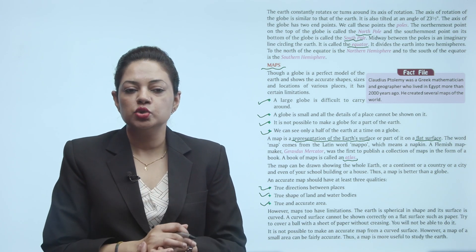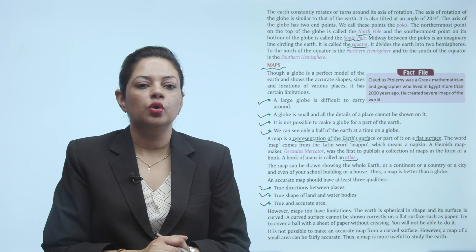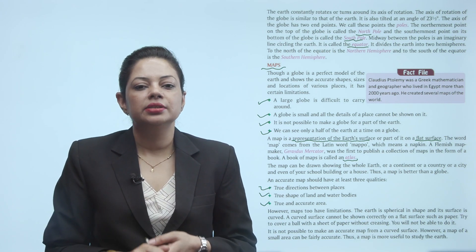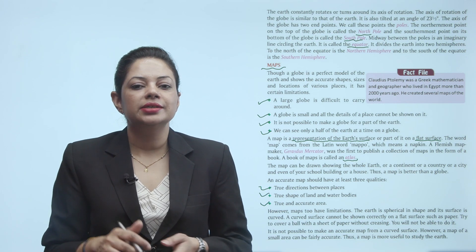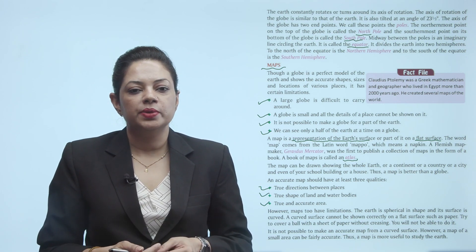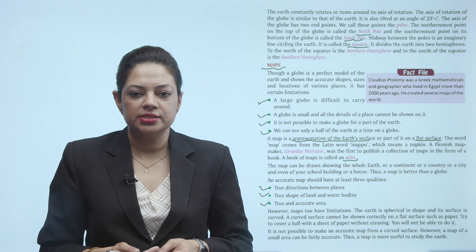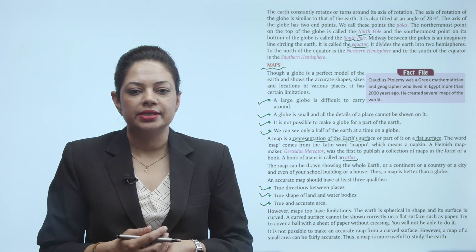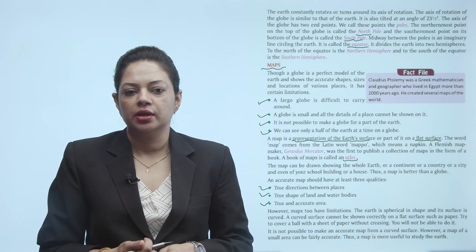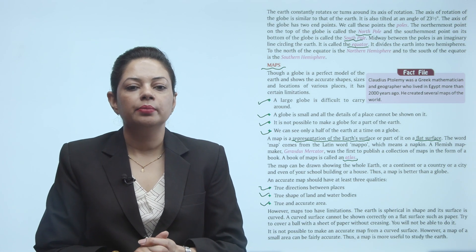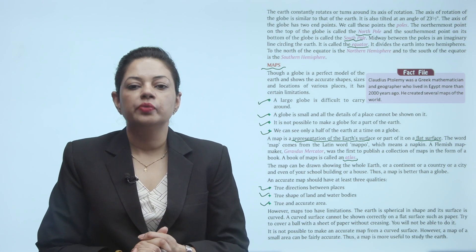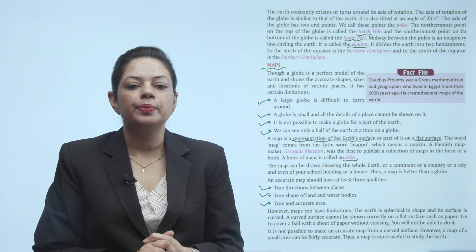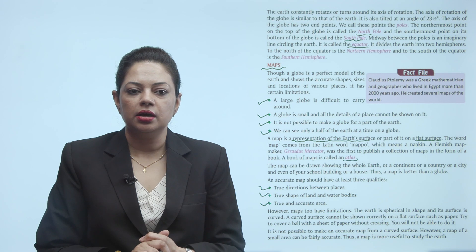However, maps do have limitations. The Earth is spherical in shape and its surface is curved. A curved surface cannot be shown correctly on a flat surface such as paper. Try to cover a ball with a sheet of paper without creasing — you will not be able to do it. It is not possible to make an accurate map from a curved surface. However, a map of a small area can be fairly accurate. Thus, a map is more useful to study the Earth.